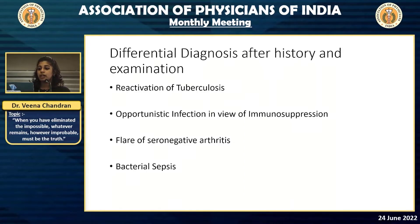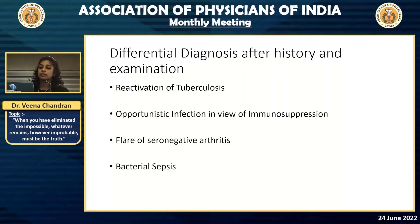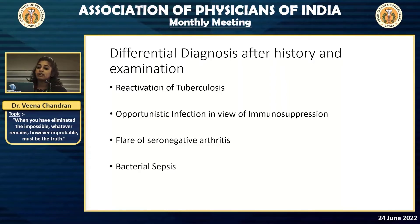At this point, our differential diagnosis was broad. Because of the background of tuberculosis, it could be a reactivation of tuberculosis. And since he was immunosuppressed after the DMARD therapy, we considered the possibility of an opportunistic infection. And also, a flare of the previous seronegative arthritis also came to mind.